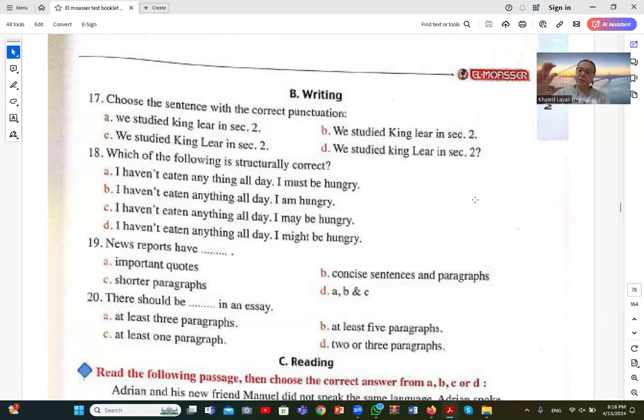Number twenty: There should be blank in an essay. At least three paragraphs. An essay should have three paragraphs: an introduction, one body paragraph, and a conclusion. So the answer is at least three paragraphs. That's it for this section. You can follow us in the next video, which will feature reading and translation. Thank you for watching.